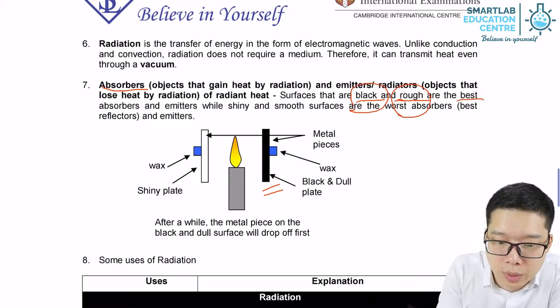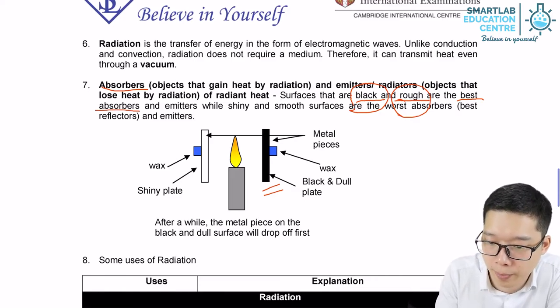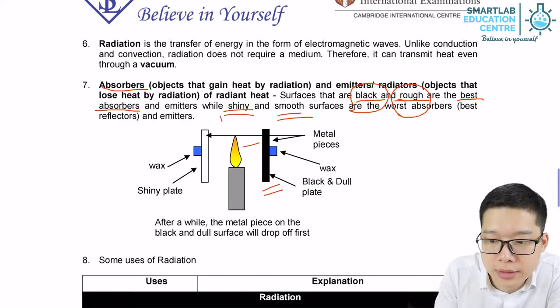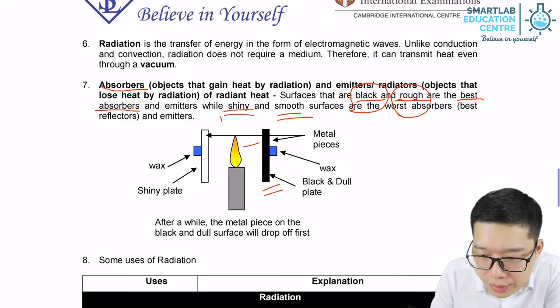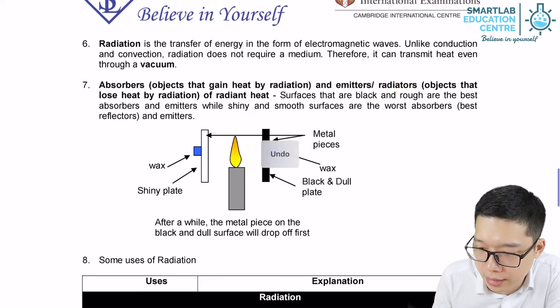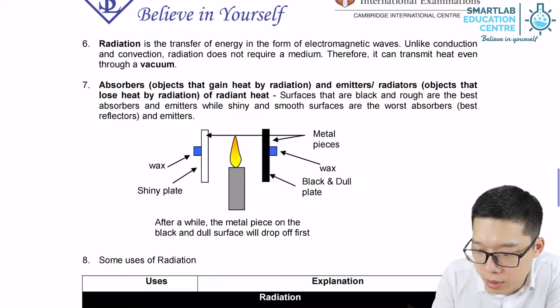They are the condition for best absorber. Shiny and smooth. Lighter in color, shiny surface, smooth surface. They are worst absorbers.